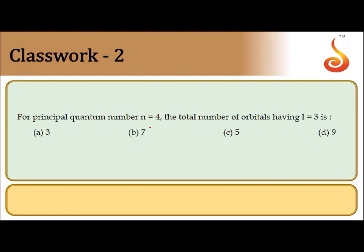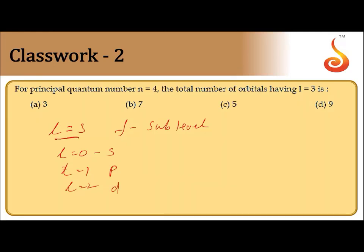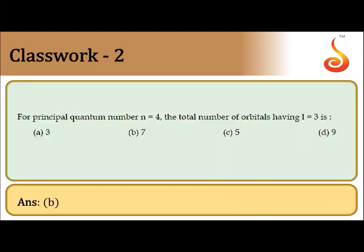Next question: for principal quantum number n=4, what is the total number of orbitals having l=3? l=3 means it is the f sub-level, because l=0 is the s sub-level, l=1 is p, l=2 is d, and l=3 is f. The f sub-level contains 7 orbitals, therefore the answer is option B.